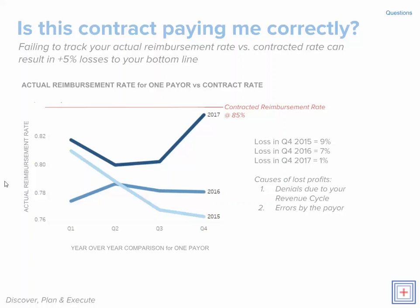On this chart, the vertical axis shows the actual reimbursement rate and the horizontal axis shows different quarters of the year. The different color lines represent different years — 2015 is the lightest line, 2016 is slightly darker, and 2017 is the darkest line.